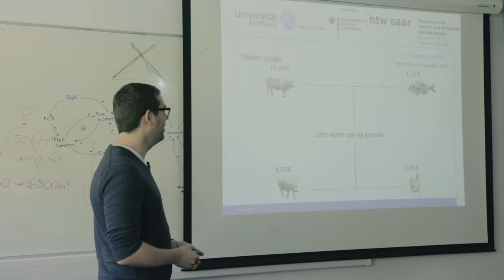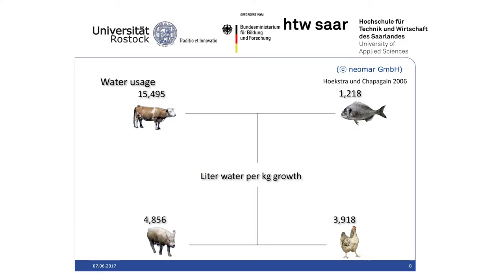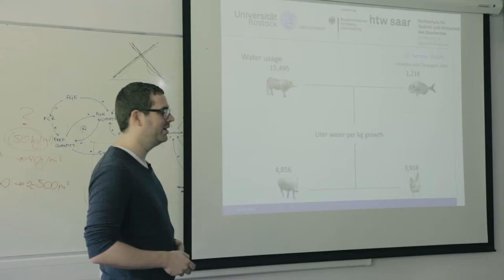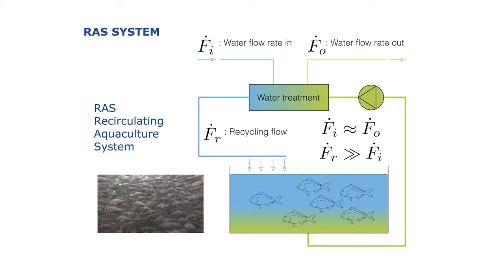Why should we do aquaculture? There are a lot of other animals we can cultivate for proteins. But if we do aquaculture like we do it in Völklingen, we surprisingly need very little water for growing fish compared to pork, beef, and chicken. If you have a flow-through system you need a lot of water, but we reduced our water exchange rate to 1%, so we need little to no water for growing our fish.